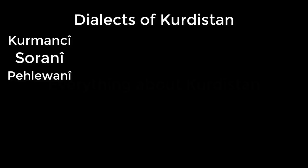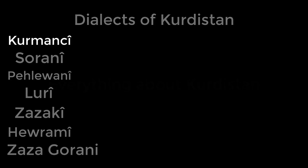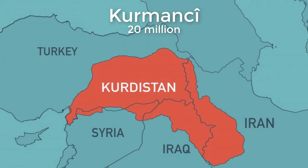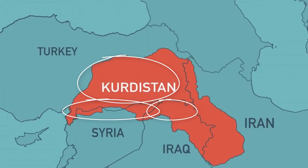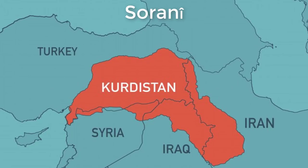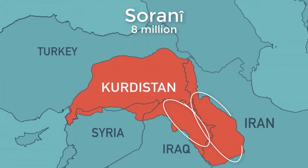The Kurdish language is divided among many different dialects. Among these are Kurmanji, Sorani, Pehlawani, Luri, Zazaki, Haurami, and Zazagorani. The most widely spoken is Kurmanji, with about 20 million speakers. It is mainly spoken in Turkish and Syrian occupied Kurdistan, but there are also Kurmanji-speaking Kurds in Iraqi occupied Kurdistan. The second most widely spoken dialect is Sorani, with about 8 million speakers, mainly in Iraqi and Iranian occupied Kurdistan.